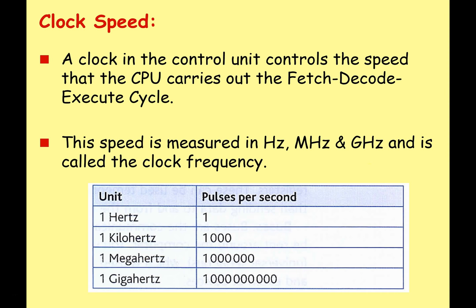If we start with clock speed — a clock in the control unit controls the speed that the CPU carries out the fetch, decode, execute cycle. This is measured in hertz, usually megahertz, which is millions of hertz, and gigahertz, which is billions of hertz. And we call this the clock frequency of the CPU.